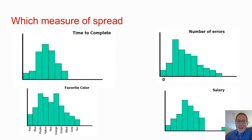So what measure of spread would we be using in these cases? Right here it looks normally distributed — you can actually test for normally distributed data, whether it's normally distributed. I'd say it's normally distributed, so you can use a standard deviation and you can use your average.